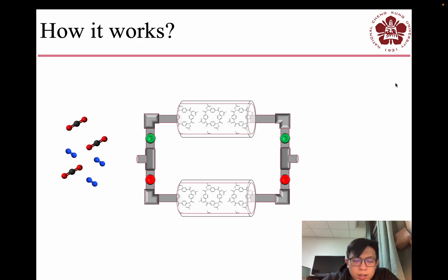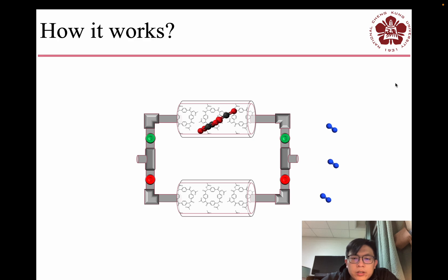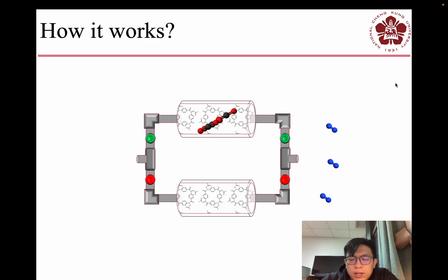We pass these gases through our system. As you can see, the carbon dioxide shows very good selectivity, allowing us to separate the carbon dioxide and the nitrogen.